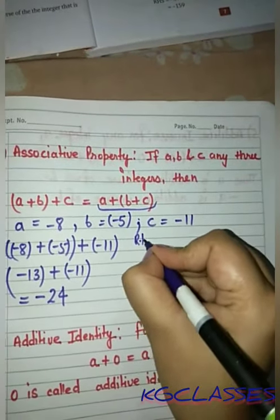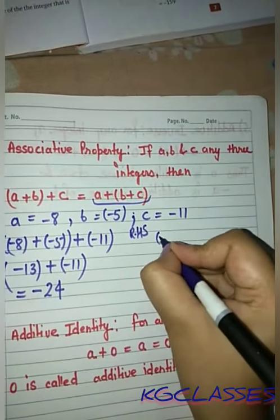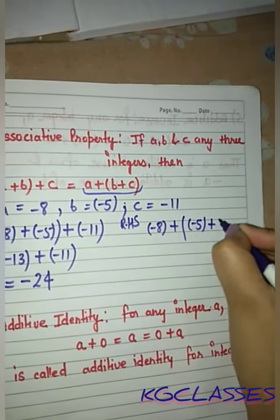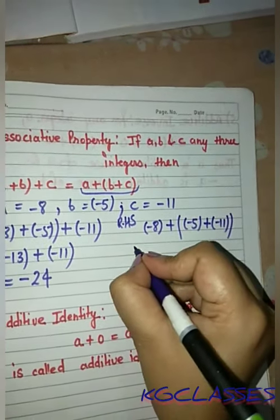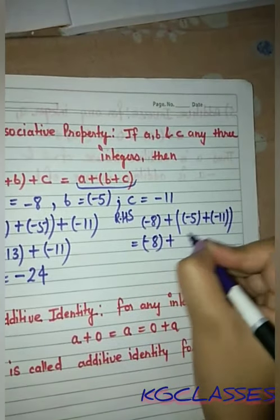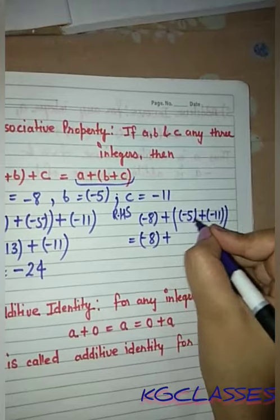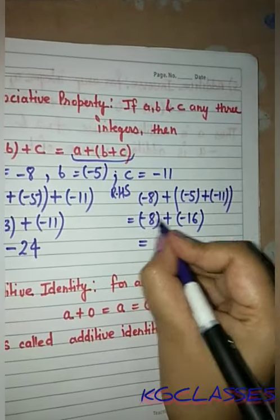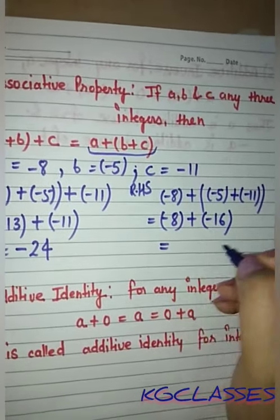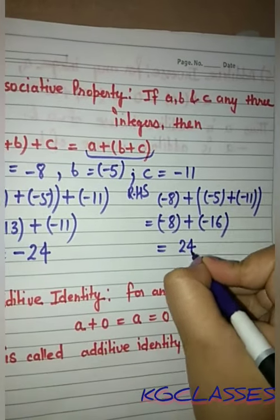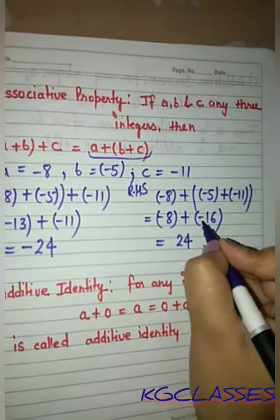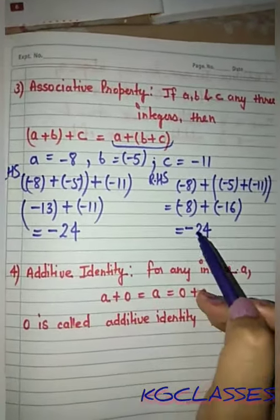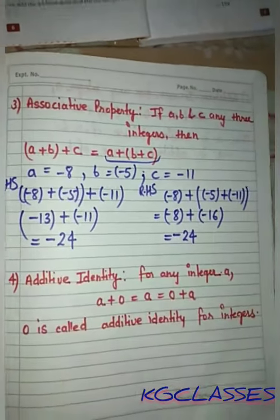For the right-hand side, with a as minus 8, b as minus 5, and c as minus 11, applying the BODMAS rule: minus minus gives plus, giving us 16, and then plus 8 gives us 24. Here we can see that the left-hand side is equal to the right-hand side, so the associative property is satisfied in addition.